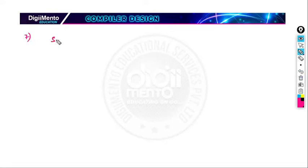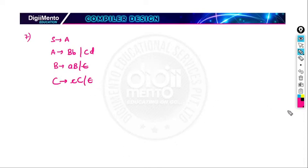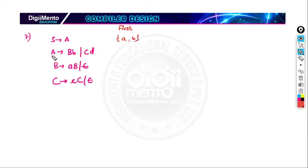Suppose we have another grammar: S generates something with A and B, where B generates small a or epsilon, C generates small c or capital C or epsilon. First of S is FIRST of A, FIRST of A is FIRST of B, and FIRST of B is small a. Since B can be epsilon, FIRST of A includes small b. FIRST of A can be capital C as well — FIRST of C is small c, and if C generates epsilon, FIRST of A will be d as well.